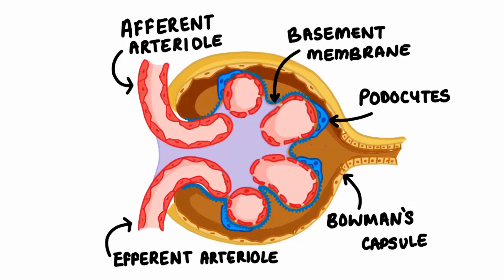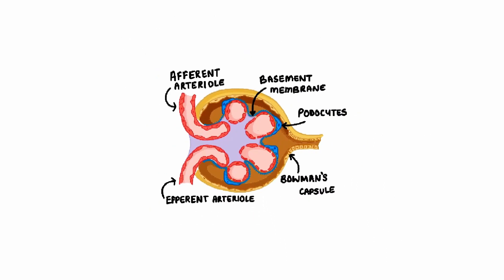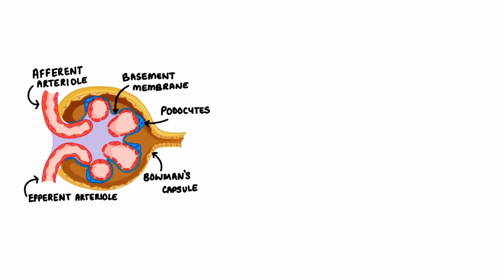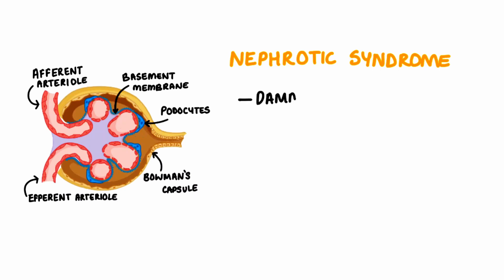In certain pathologies, damage to this area can lead to an individual having an abnormal urine sample. Starting with nephrotic syndrome — here there is damage to the podocytes, meaning that the kidney is more permeable and therefore allows proteins to pass into the urine.